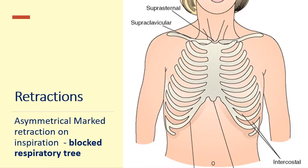We also assess for retractions, which are always considered abnormal. An asymmetrical marked retraction on inspiration could indicate a blocked respiratory tree — meaning a major branch of the bronchus is affected. If there is intercostal retraction on one side but not the other, that would indicate a blockage.